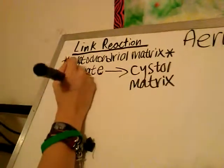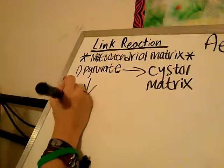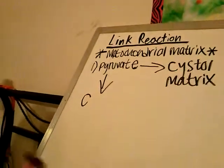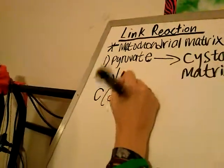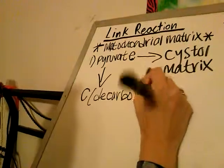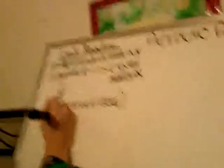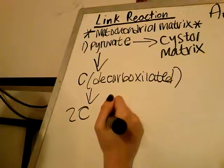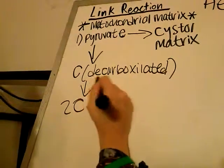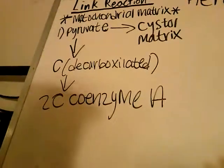So, then, what happened was: carbon was too tired of pyruvate and left — so it was decarboxylated. And it forms a two-carbon substance called coenzyme A, which is better known as Co-A, if you're lazy. You gotta love Co-A.